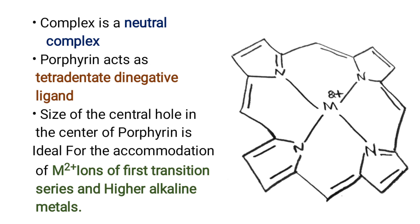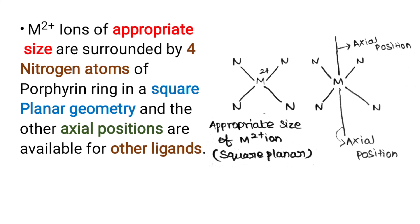Porphyrin acts as a tetradentate dinegative ligand. The size of the central hole in the center of porphyrin is ideal for the accommodation of M2+ ions of first transition series and higher alkaline metals. The M2+ ions of appropriate size are surrounded by the four nitrogen atoms of the porphyrin ring in a square planar geometry. The other axial positions are available for incoming ligands. Here this is in a square planar structure with appropriate size for the M2+ ion.